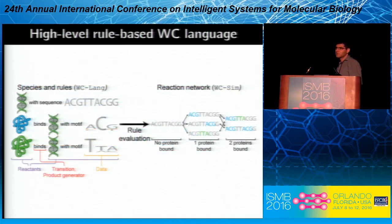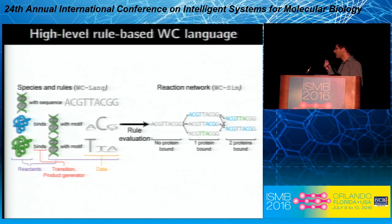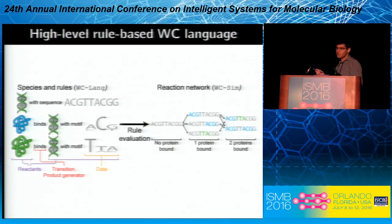The second thing we're developing is a higher-level rule-based language for describing wholesale models. This language will have a very central role in connecting genomics and bioinformatics with systems biology. From a genomics or bioinformatics perspective, it would allow you to describe a reaction where a protein binds a location in DNA — rather than as a specific location or enumerated list — but instead defined as a sequence motif.